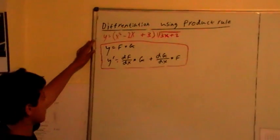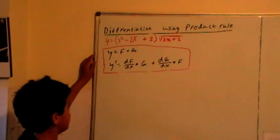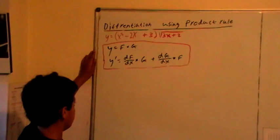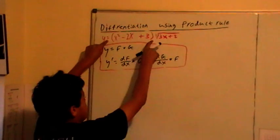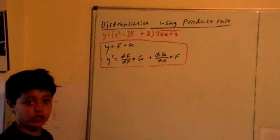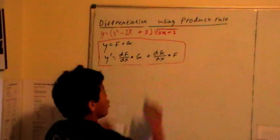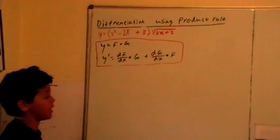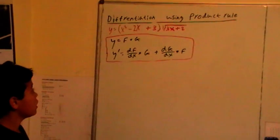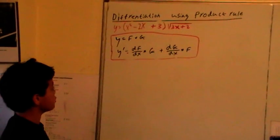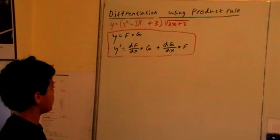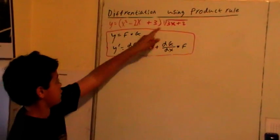Here is our problem. I can see that is a product function. The first function is x squared subtract 2x plus 3. The second function is root of 3x plus 2. Now, to find y dash, I'm going to label this bracket f and this bracket g.